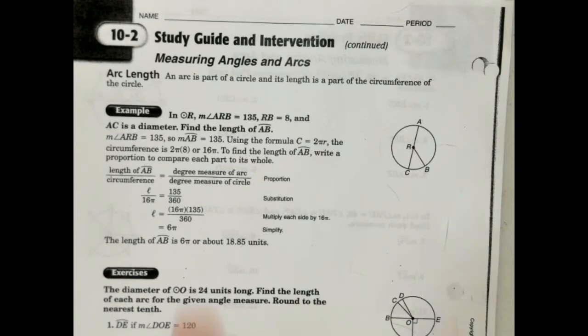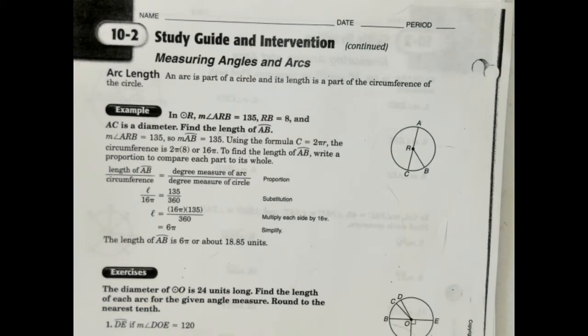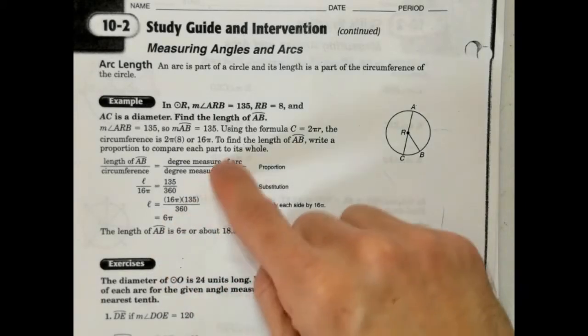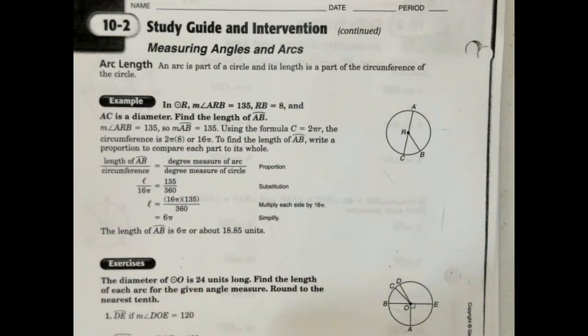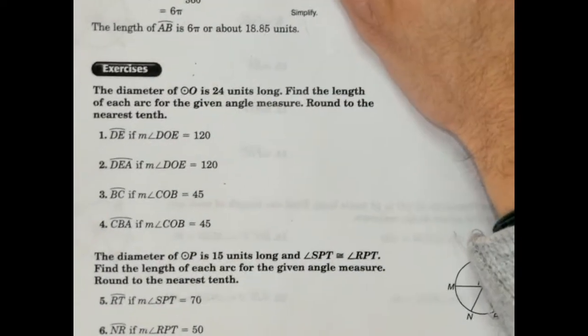Arc length is the part of a circle, and its length is the part of the circumference. So basically, I want to show you how you can calculate arc length if you have enough information. If you look at these examples here, it actually walks you through it, but we're going to do some exercises together, and that should help clarify it. Let's go ahead and start down here.